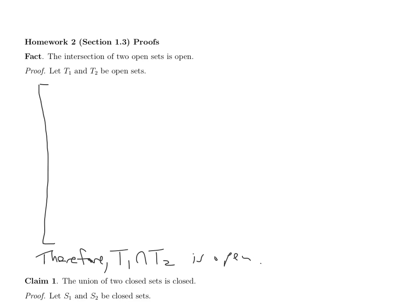Since that's a statement about every point in the set, the structure of the proof would start with: give me any point in the set. So I invite my reader to pick any point in the set, and I would like to argue that X0 is an interior point — that X0 is in the interior of T1 intersect T2.